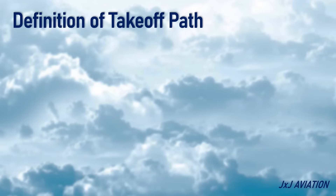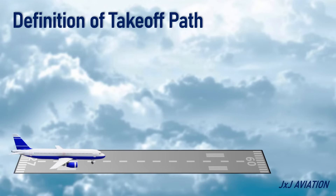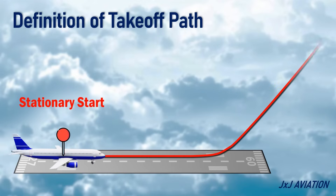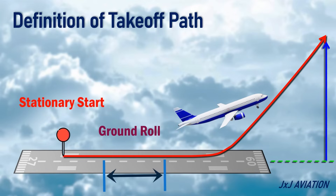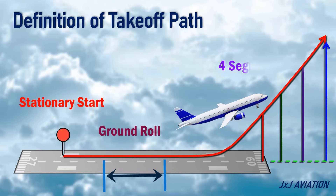Definition of takeoff path. The takeoff path of an aircraft starts from an aircraft's stationary start point until the aircraft reaches a height of 1,500 feet above the takeoff surface. The takeoff path starts with the ground roll. After the ground roll, the path is divided into four segments. Let's look at the ground roll and the takeoff segments in more detail.